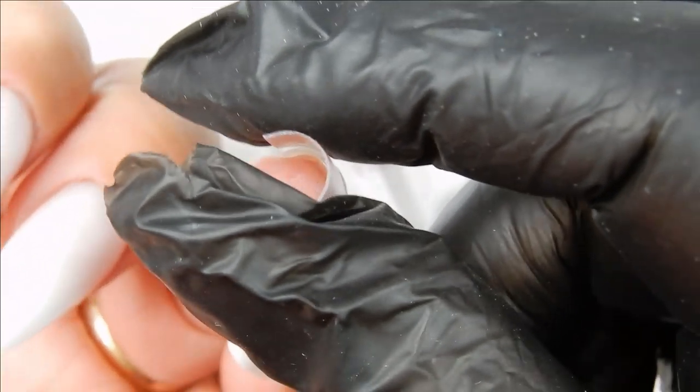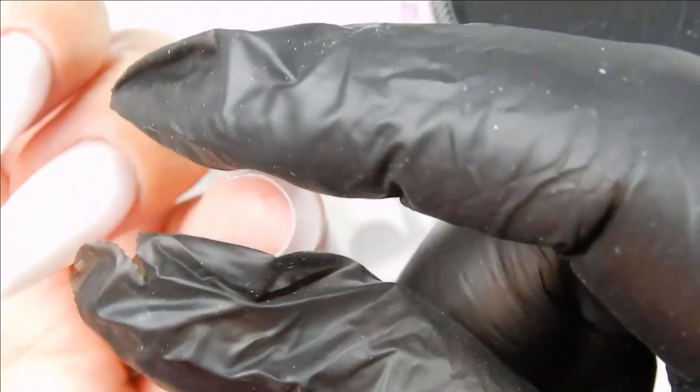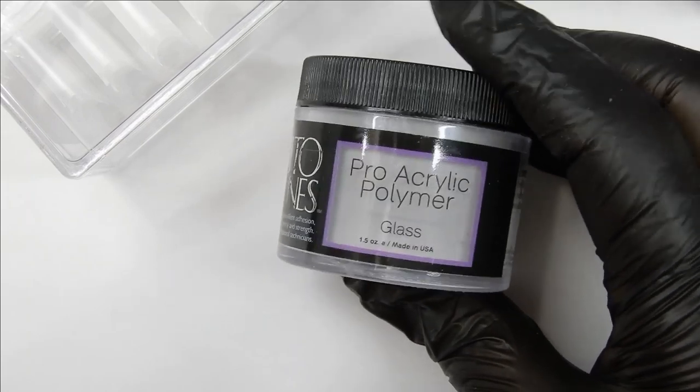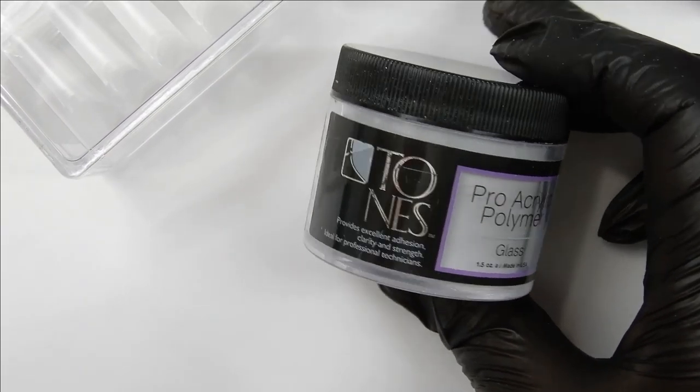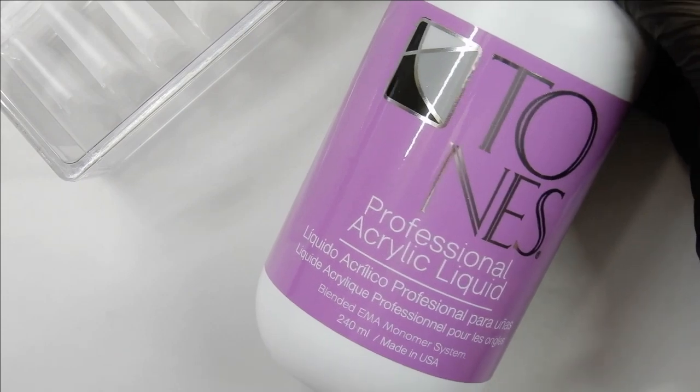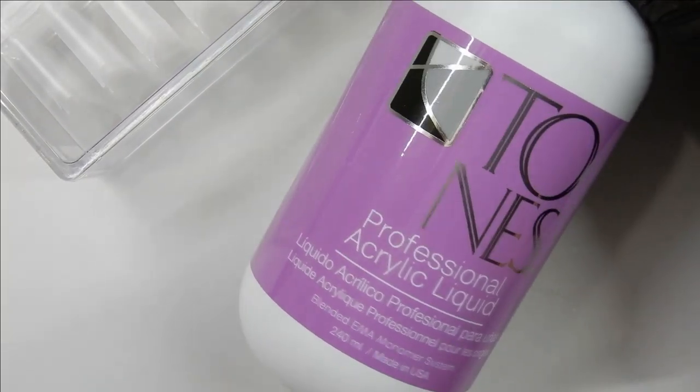But I am going to pinch it to give it even a tighter C-curve. I'm using clear acrylic from the Tones company, this is Glass, and I will also be using their monomer. I will have links to both of these items in the description box below. This is a regular setting monomer, it's not a fast set, so it's about 90 seconds I would say.